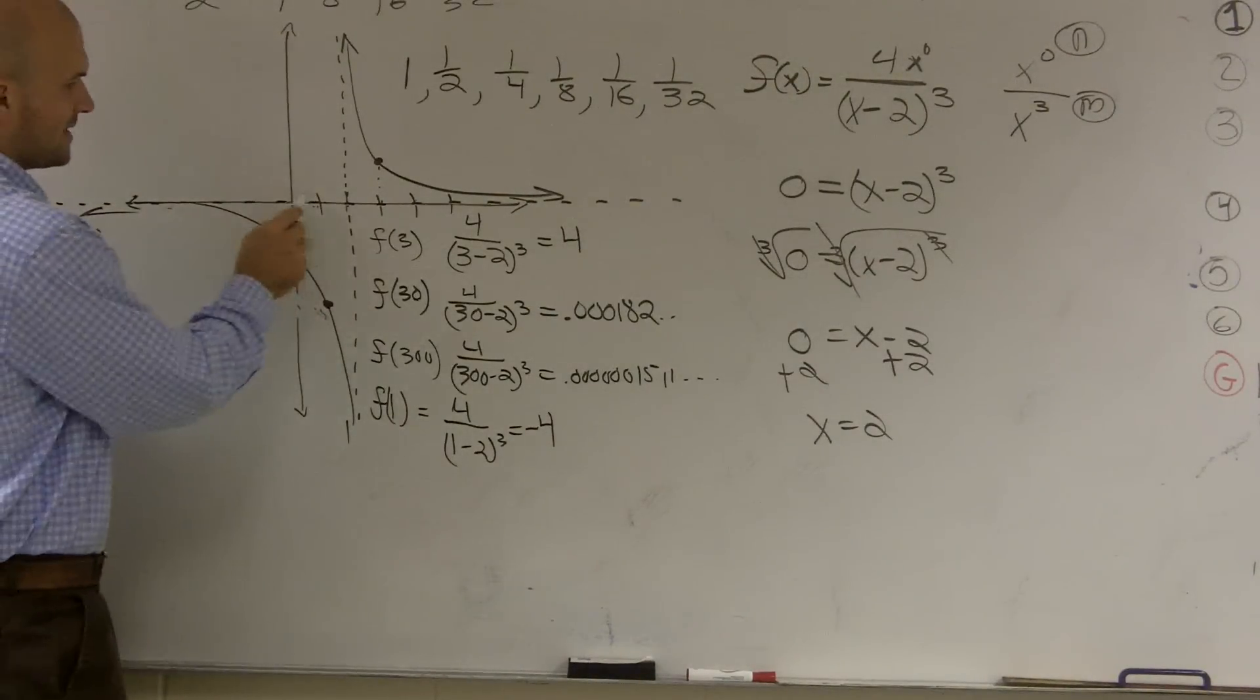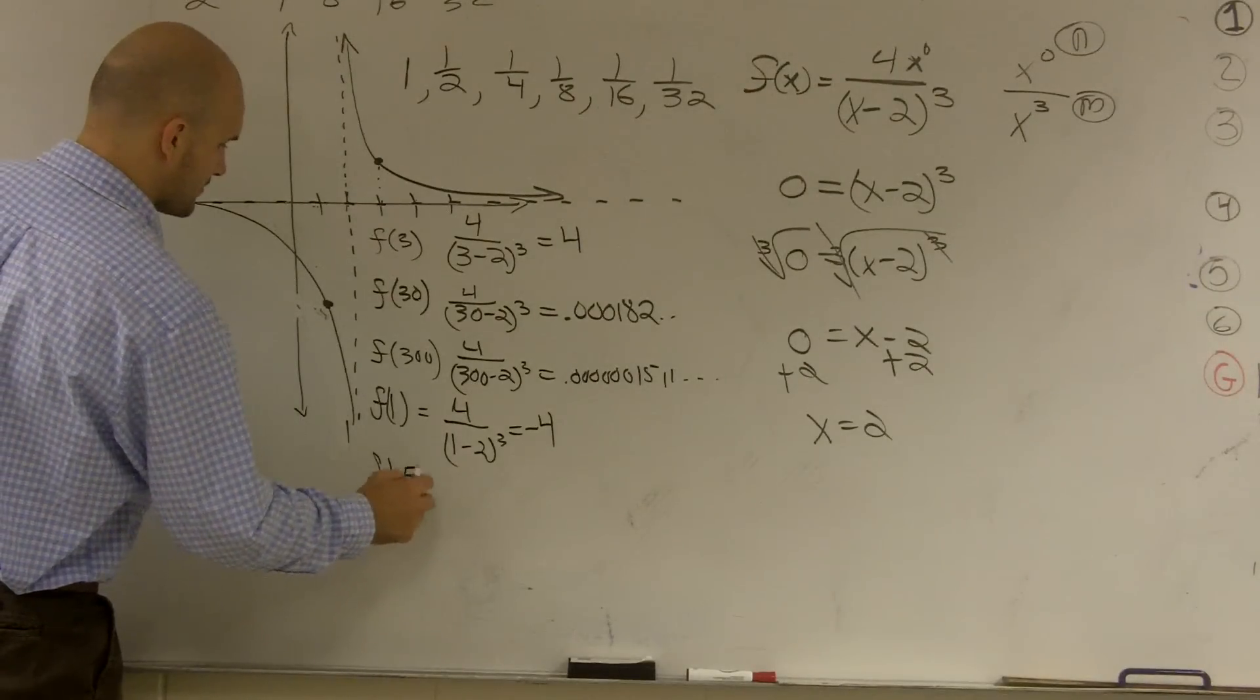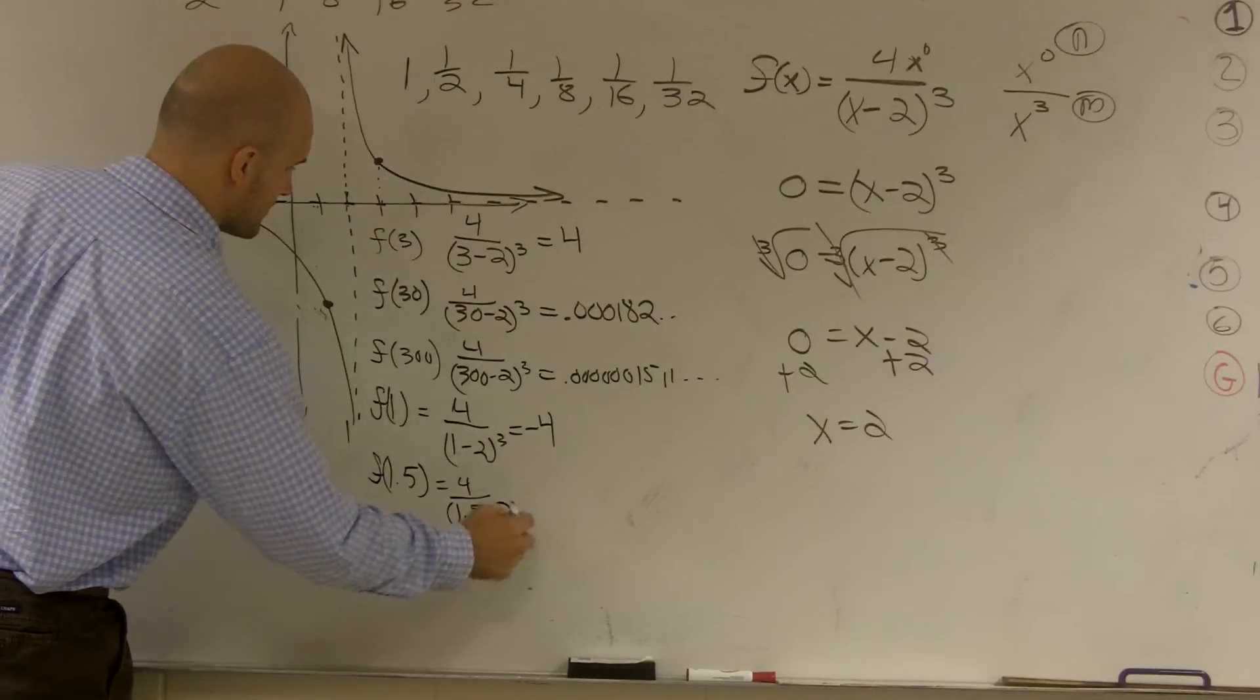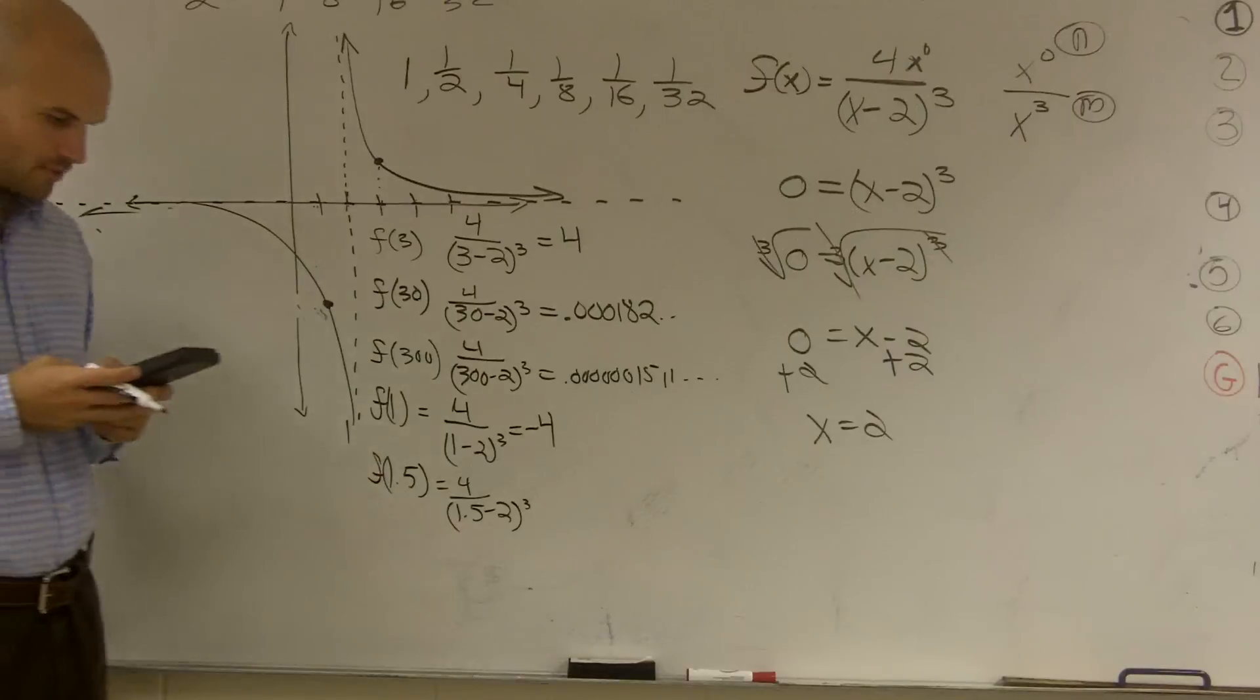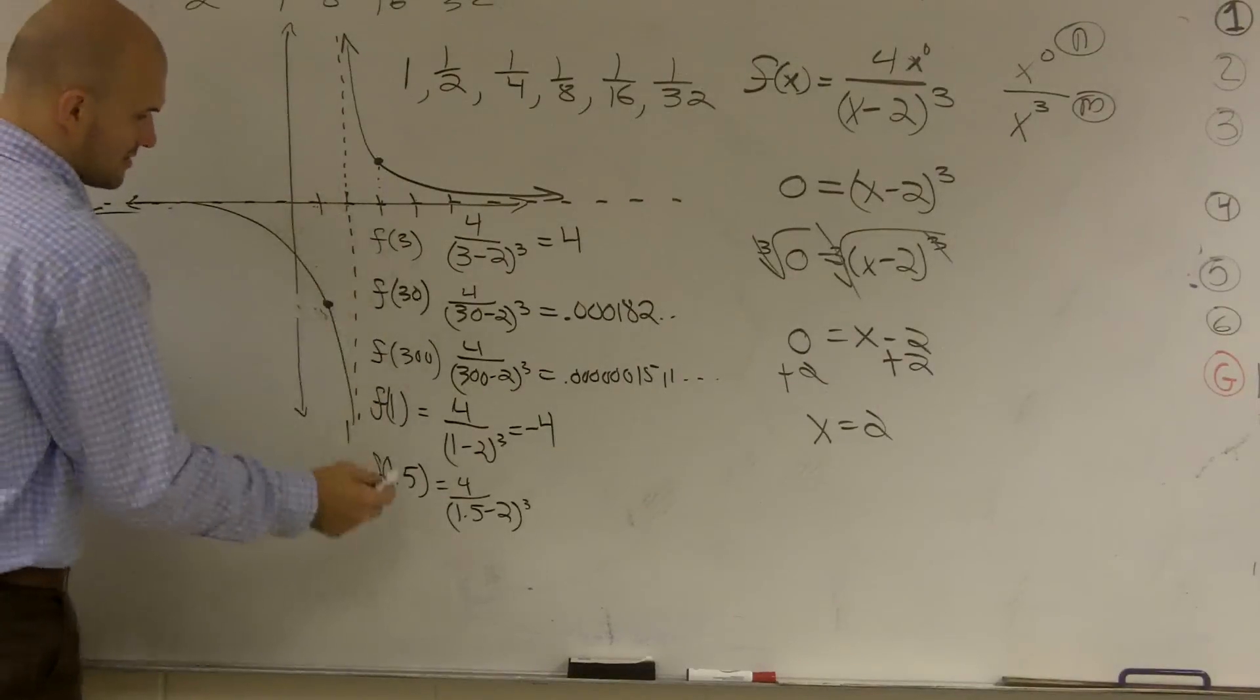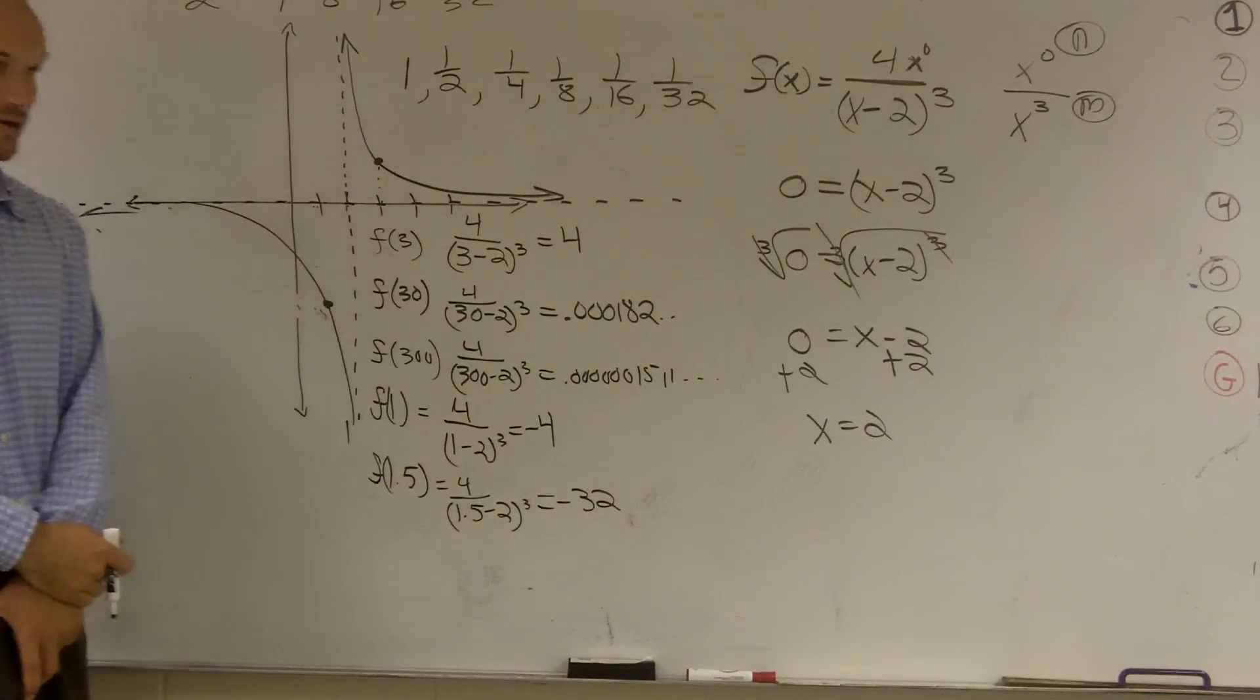All right? So now let's do, well, we can't do f of 2 because we know f of 2 never hits. So let's do f of 1.5. So that's 4 over 1.5 minus 2 cubed. So that's going to be a negative 0.5 to the third power, 4 is divided by that, is a negative 32. So that gives me a negative 32. Pretty close.